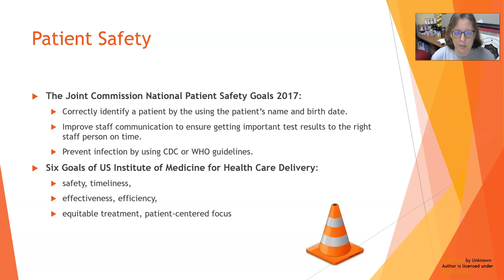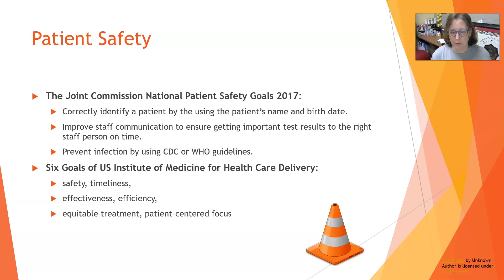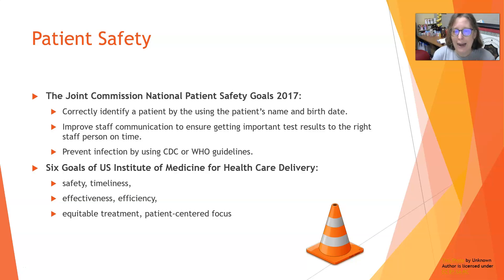The Joint Commission put out national patient safety goals back in 2017. The first was to correctly identify a patient by using the patient's name and birth date — those are the two accepted identifiers. Best practice is for the lab tech or phlebotomist to identify themselves, tell the patient they're from the lab, and then ask the patient to tell them their name and date of birth — eliciting the information from the patient themselves.